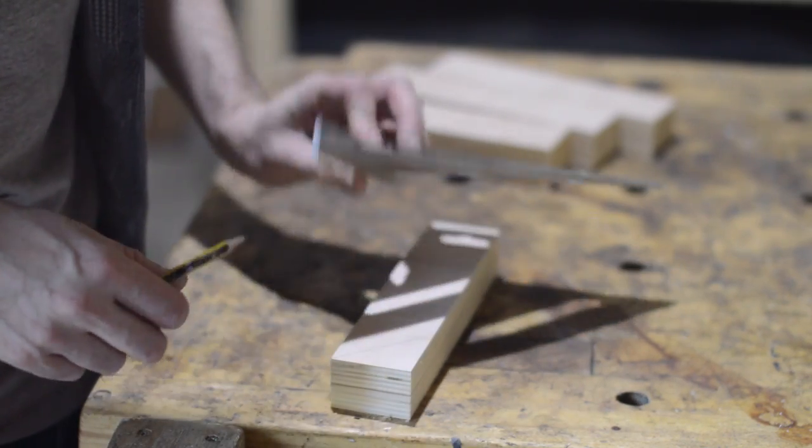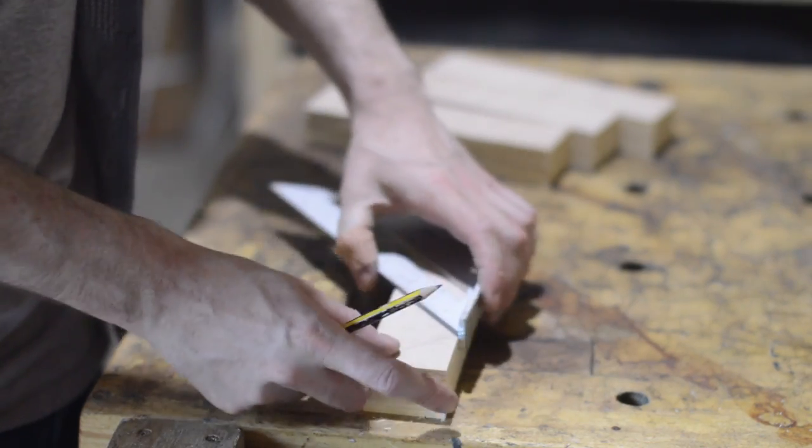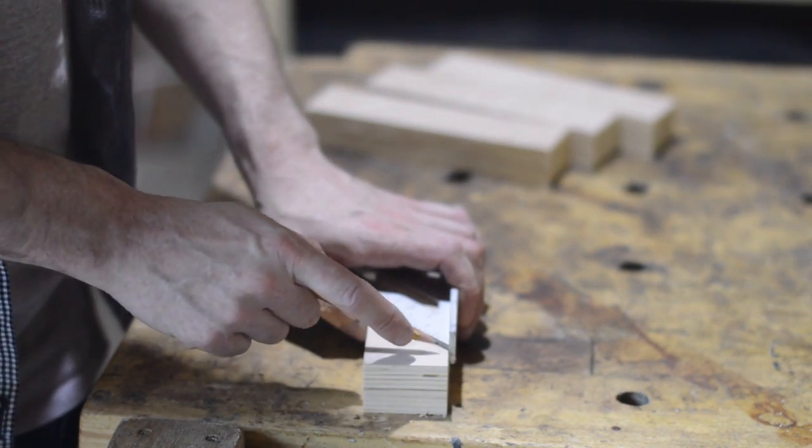At one end of the block it's going to have a 45 degree angle and the other end is going to have 22 degrees, if I can ever work out which way around the speed square needs to go.